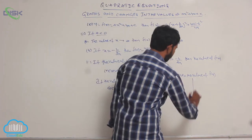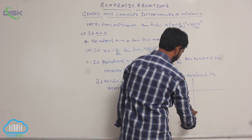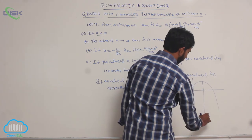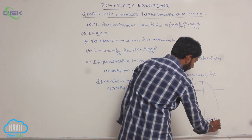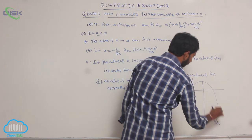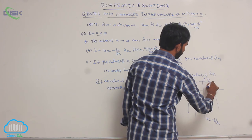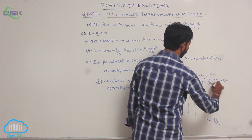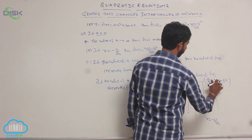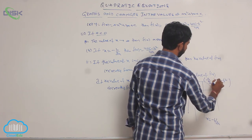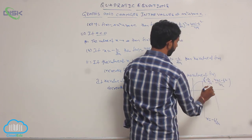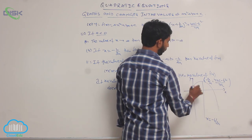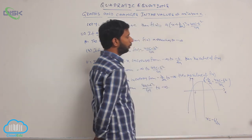Its graph is represented with x equal to minus b by 2a as the axis of symmetry. The vertex point is at x equals minus b by 2a, where f of x equals 4ac minus b squared by 4a.